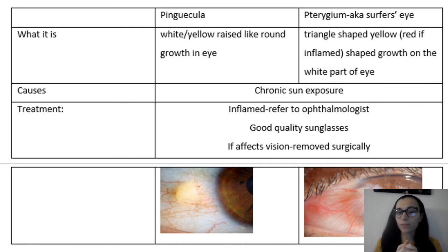So now we go on to differentiate these two conditions. Pinguecula is yellowish, whitish, raised growth in the eye. As you see in this picture, it's a perfect picture. It's a little raised, and it's yellowish, a little bit whitish, and it's caused from sun exposure. You want to do for that a referral to ophthalmology, good quality sunglasses. If it affects vision, it's going to have to be removed surgically. The next one is also called surfer's eye, and that is a triangle yellow shape. It's in the growth of the white part of the eye. If you just look at the picture, it's quite different. You can see the difference. Caused by the same thing, by sun exposure, and treated the same way.